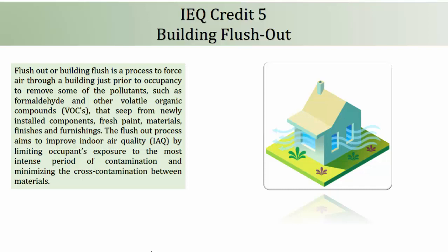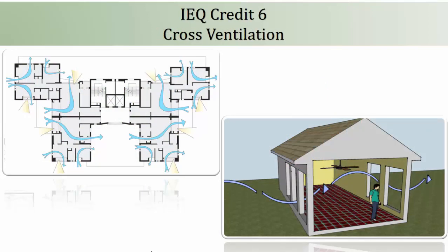The next and last credit is IEQ Credit 6: Cross Ventilation. This credit carries 4 points. The intent is to provide cross ventilation for a healthy environment. 2 points will be achieved if minimum 50% of the regularly occupied area in each dwelling unit has an opening to the outdoor environment in at least 2 orientations, and 4 points can be awarded if this ratio is more than 75%. The openings considered for the calculation should meet the mandatory pressure requirement, and the ratio calculation method is specified in the guideline.